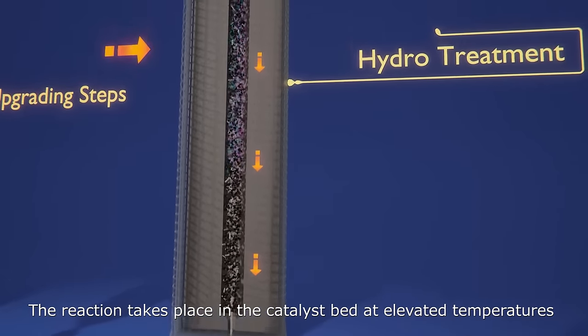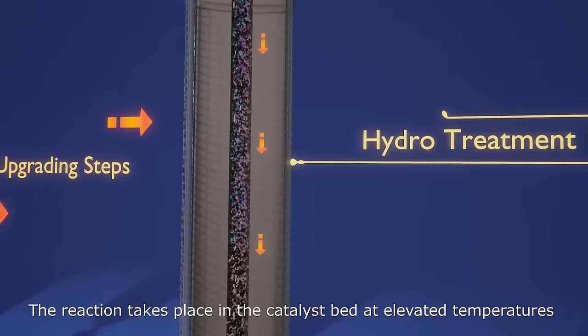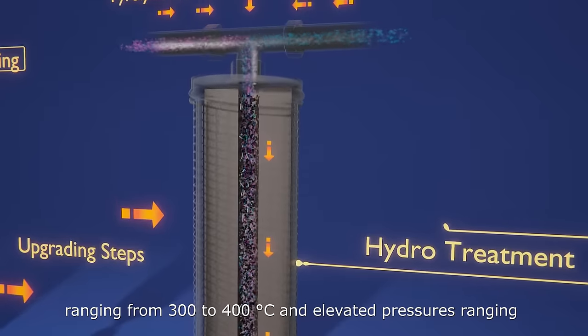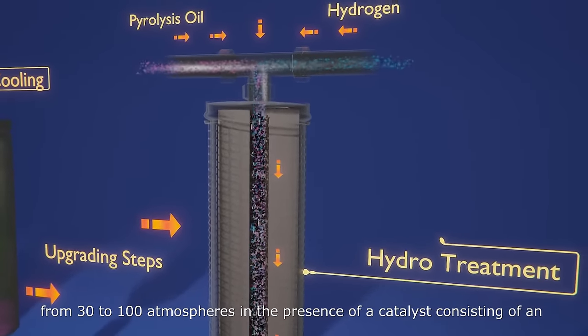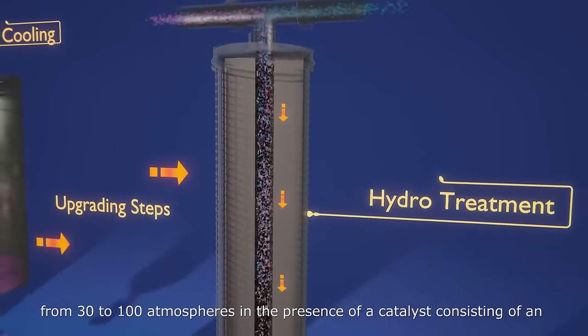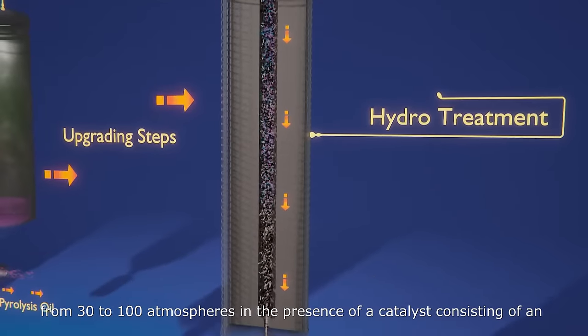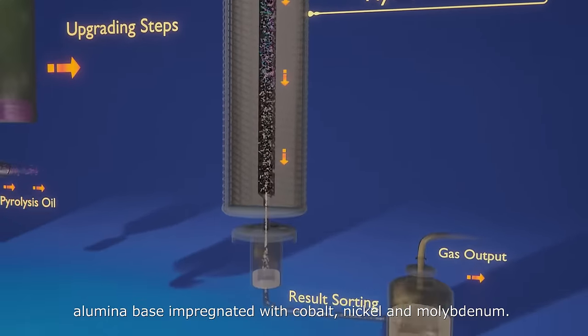The reaction takes place in the catalyst bed at elevated temperatures ranging from 300 to 400 degrees Celsius and elevated pressures ranging from 30 to 100 atmospheres in the presence of a catalyst consisting of an alumina base impregnated with cobalt, nickel, and molybdenum.